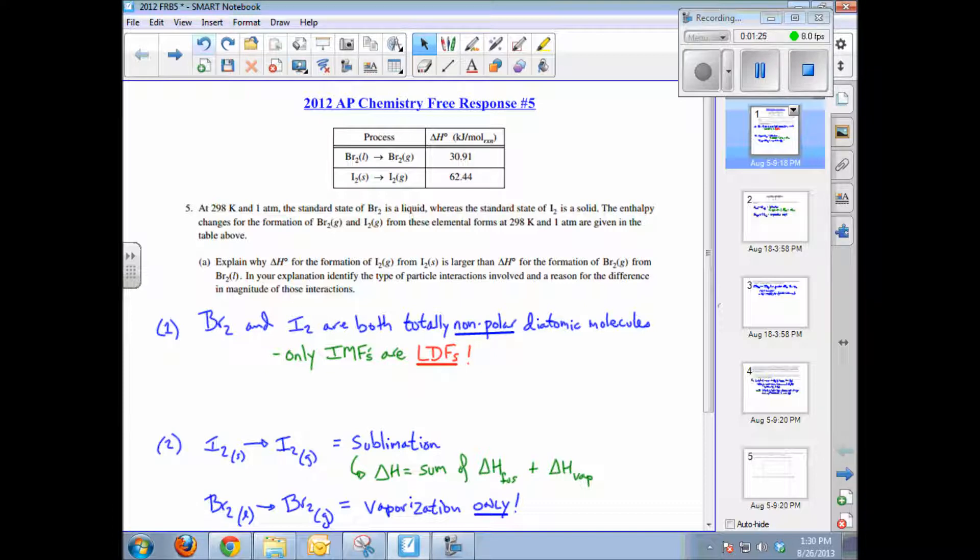And therefore it appears that the LDFs are stronger in iodine versus bromine. Why would that be? Well, iodine is a much bigger atom. It has more electrons and it's a larger size, has a greater ease of polarizability.